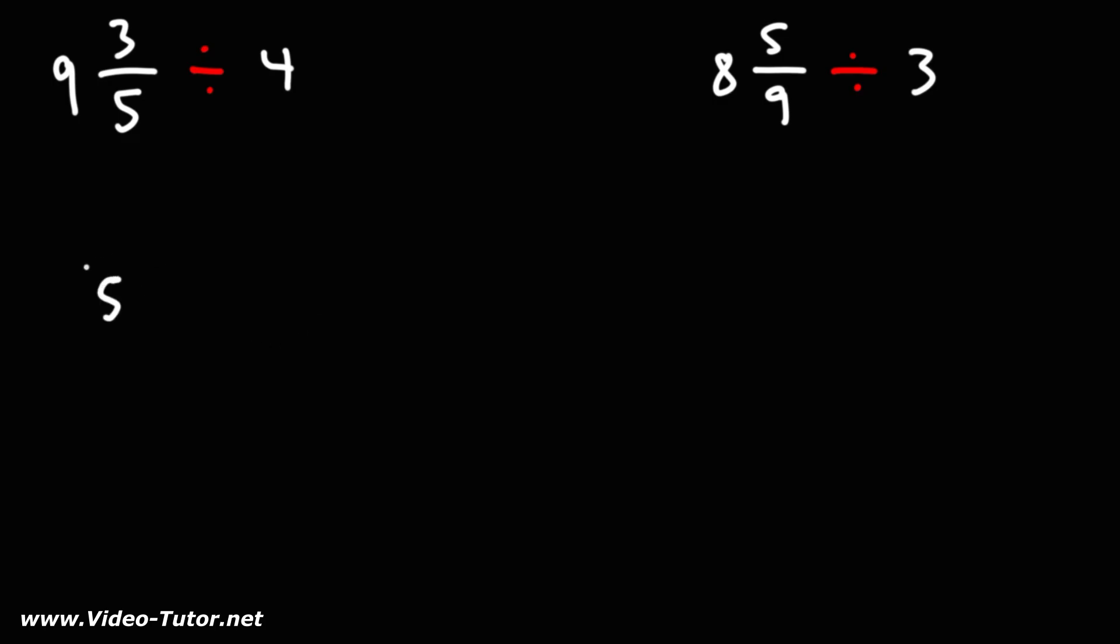So let's rewrite the denominator 5. Next, we'll multiply the whole number by the denominator and then add the numerator. 9 times 5 is 45 plus 3. That's 48.